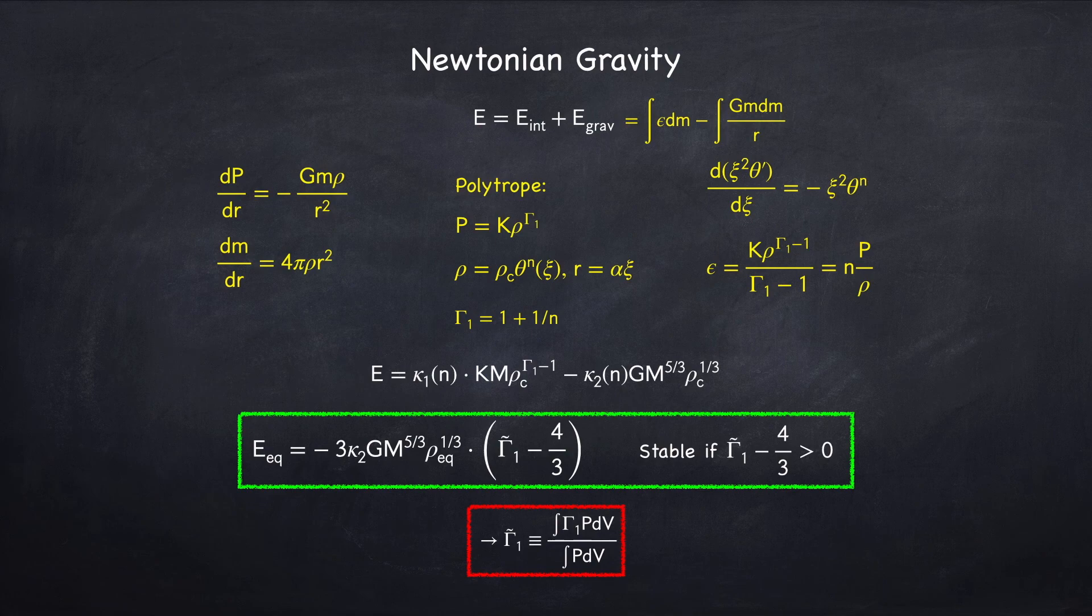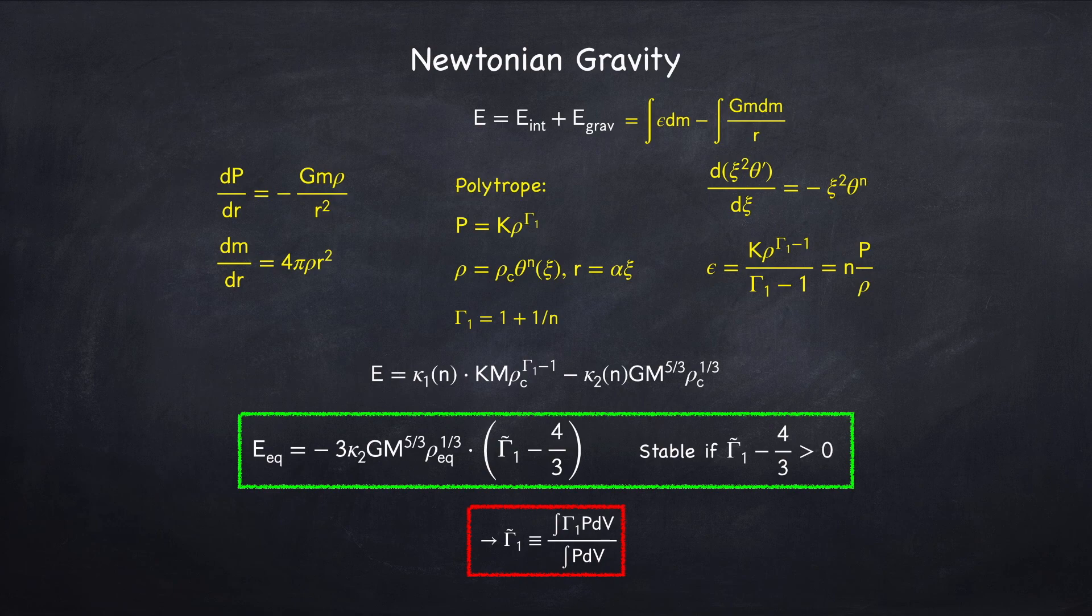And I clarified that it's not actually gamma 1 that matters. It's this quantity gamma 1 tilde that is the pressure average of gamma 1 over the star. This accounts for variations in gamma 1, as it may not be constant throughout the star.